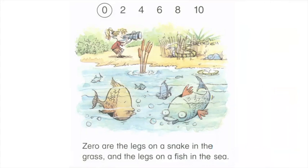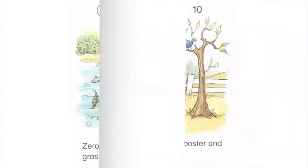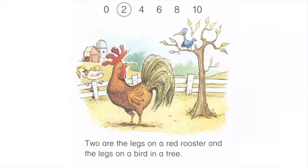Zero are the legs on a snake in the grass and the legs on a fish in the sea. Two are the legs on a red rooster and the legs on a bird in a tree.